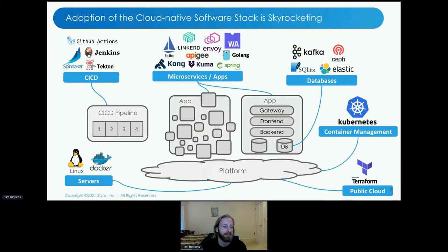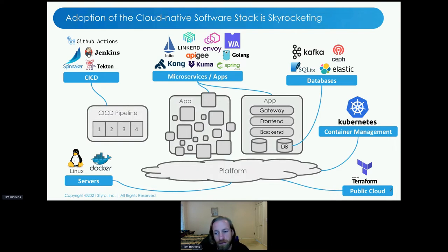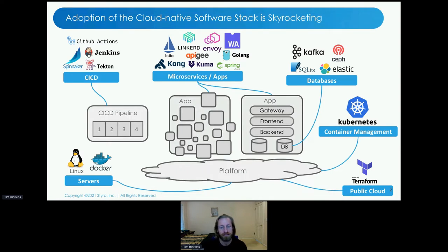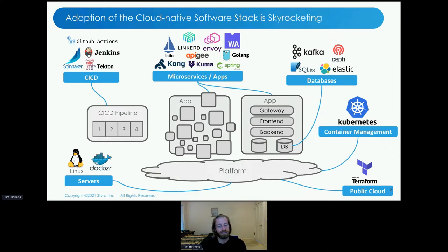You'll notice there are all the kinds of components you're used to: CI/CD pipelines, the platform that the CI/CD pipeline is deploying your applications to — by platform I mean public cloud or Kubernetes. Then there's the application running on top of the platform, with all the usual components: front ends, back ends, and databases. We're also seeing many applications architected in a microservice way, and this is a major trend happening throughout industry.